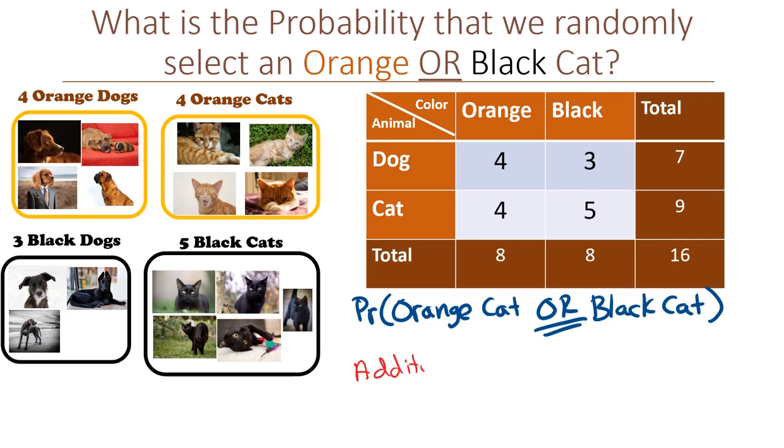If a and b are disjoint or mutually exclusive events, then the addition rule says that the probability of a or b equals the probability of a plus the probability of b. Let's see if that applies here. Is being orange disjoint from being black? Yeah, we're assuming here that all the pets are one color or the other. They're never both at the same time.